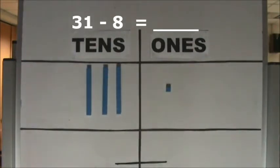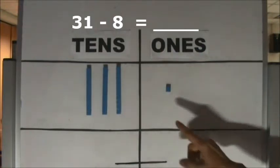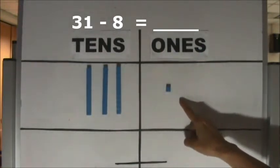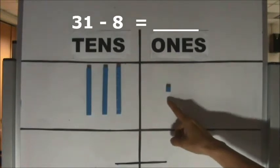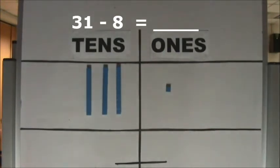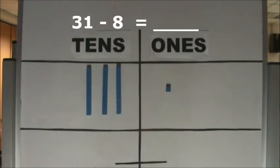Let's take away 8 ones. Are there enough ones to take away 8 ones? We need to regroup 1 ten for 10 ones.